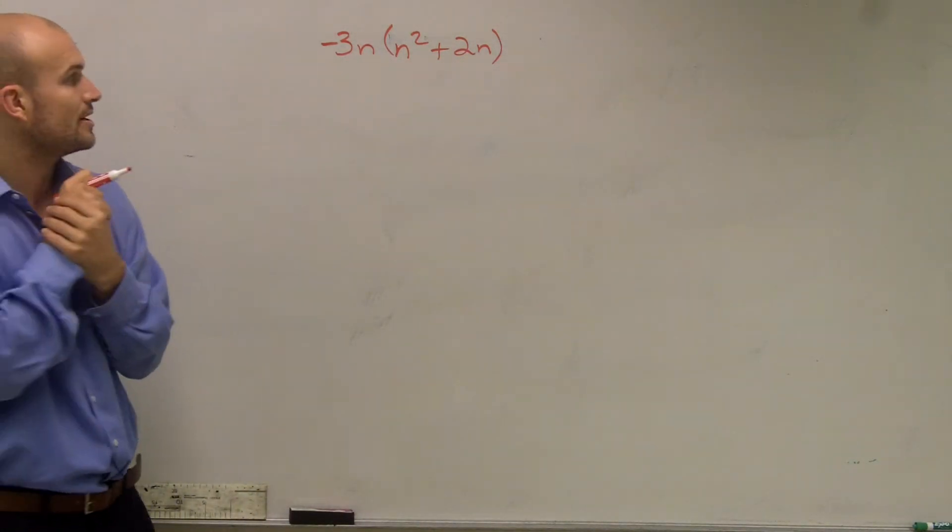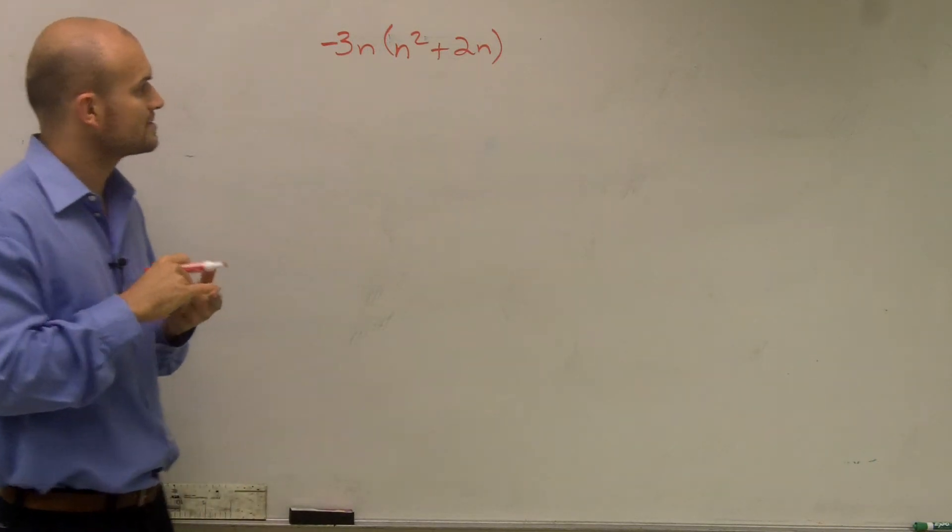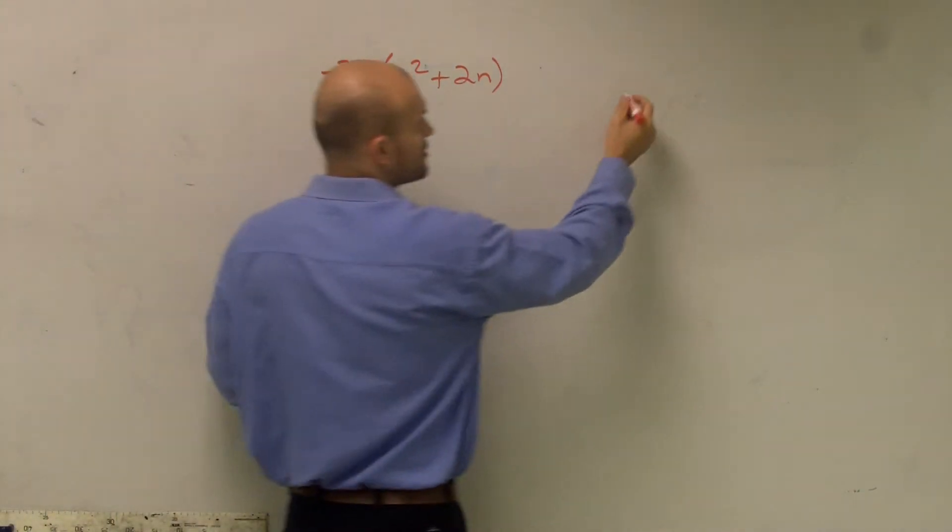when I have negative 3n times n squared plus 2n, there's a couple things we need to know about this. First of all, we need to remember what our distributive property says.